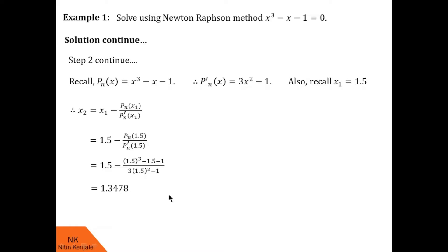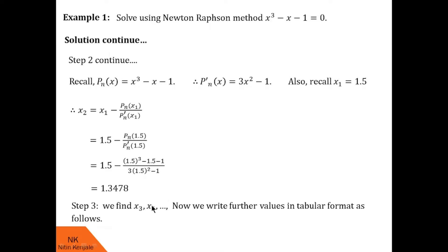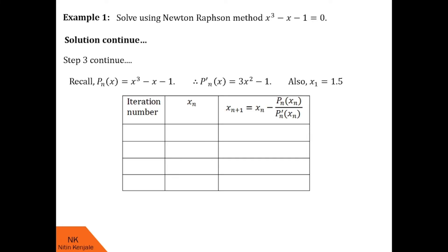Now we go to step 3. We keep finding further better approximate solutions x3, x4, and so on, and write these values in a tabular format. The table has three columns: iteration number, xn, and xn+1, calculated using the Newton-Raphson formula. In iteration 1, x1 = 1.5 and we found x2 = 1.3478. In iteration 2, using x2, we find x3. I suggest you keep your calculators handy. Using the expressions for Pn(x) and Pn'(x), I get x3 = 1.3252.